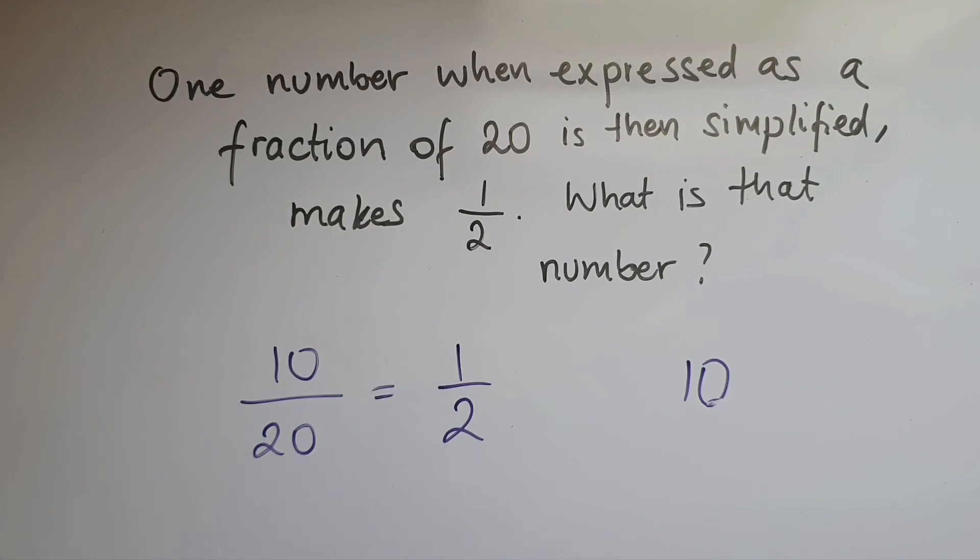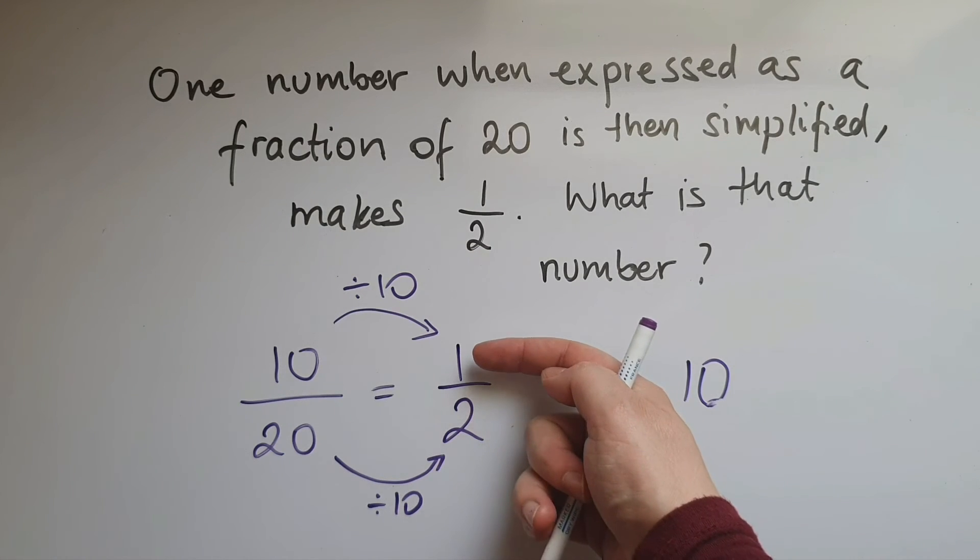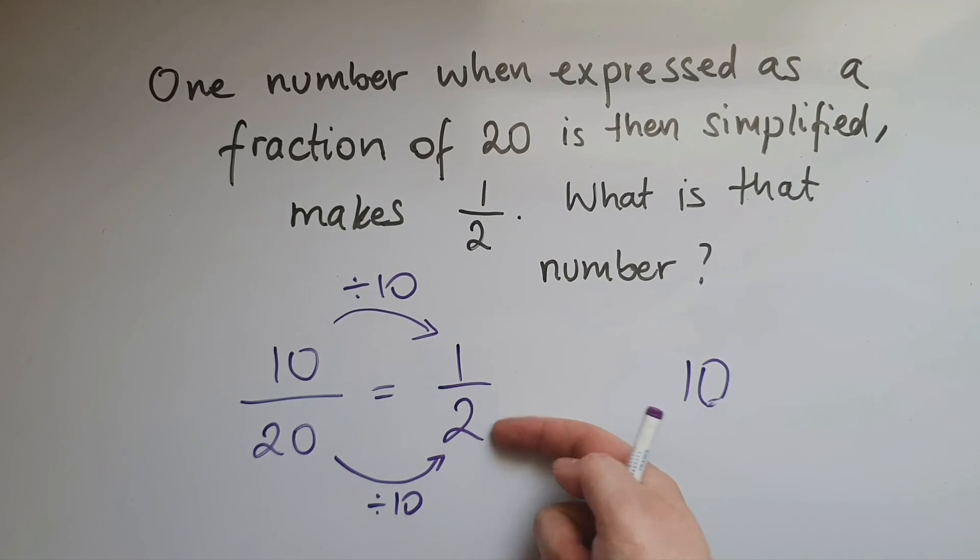Another way to look at this is: what have we done to get from 20 to 2? What have we divided by? That is 10. So same thing over here, that number which is missing, when you divide by 10 it gives you 1. Or looking at this, 1 is half of 2, so this must be half of 20.